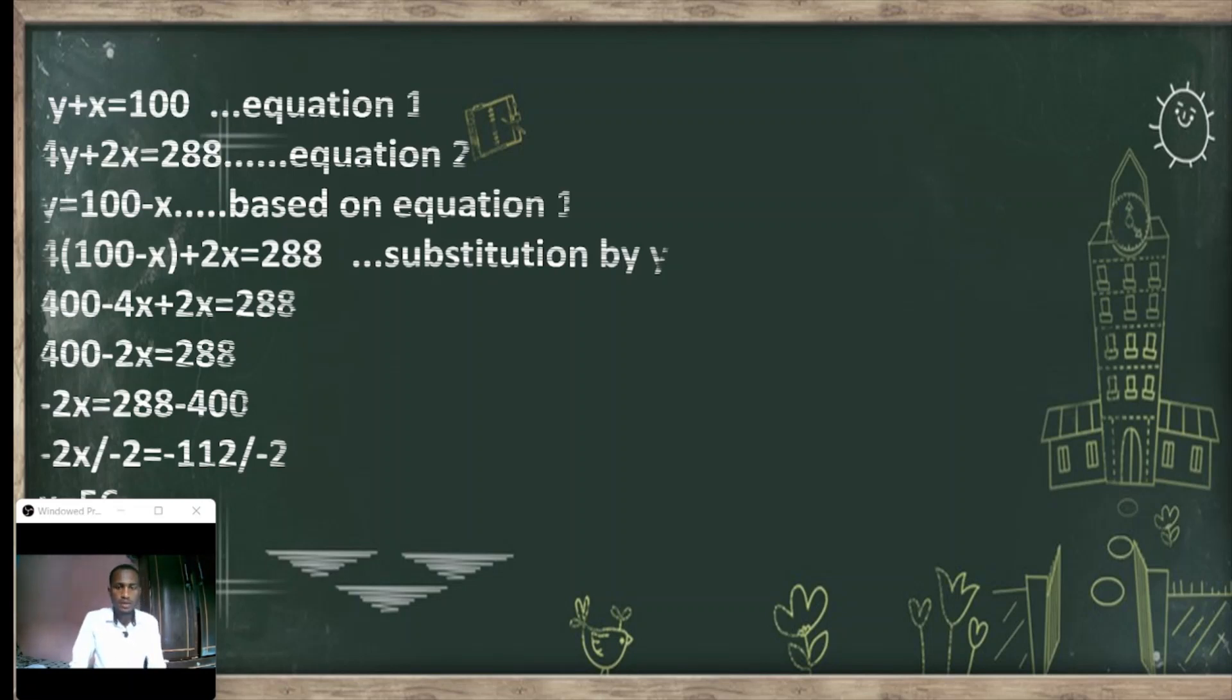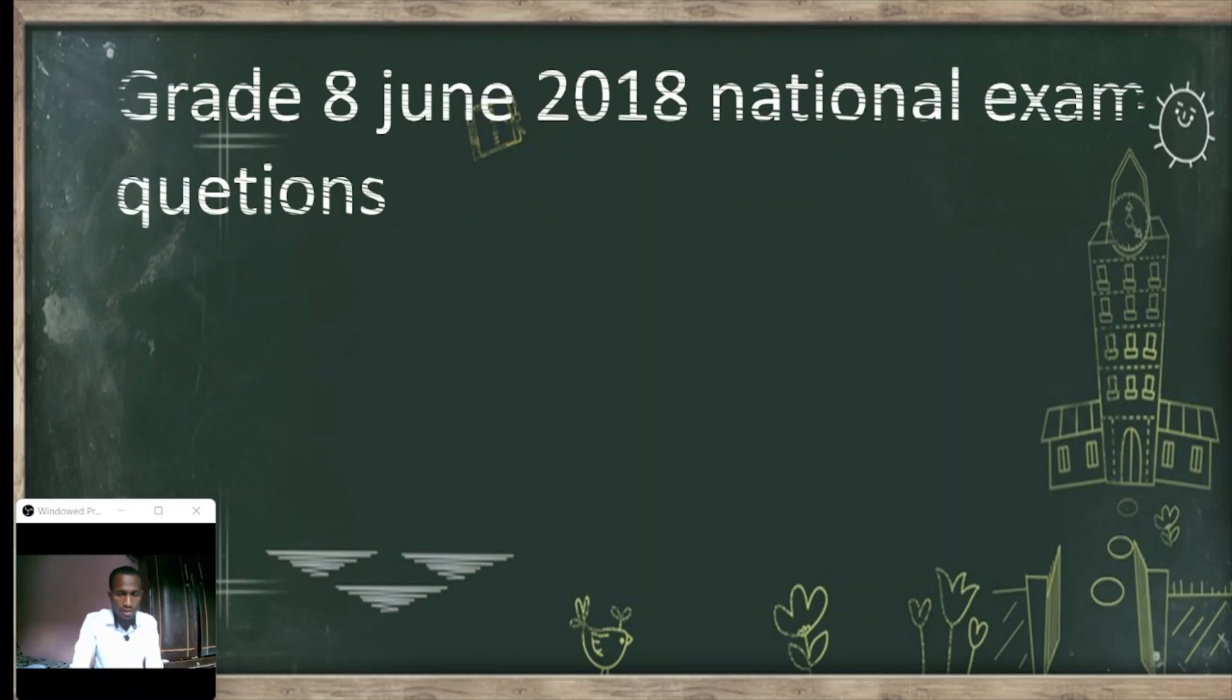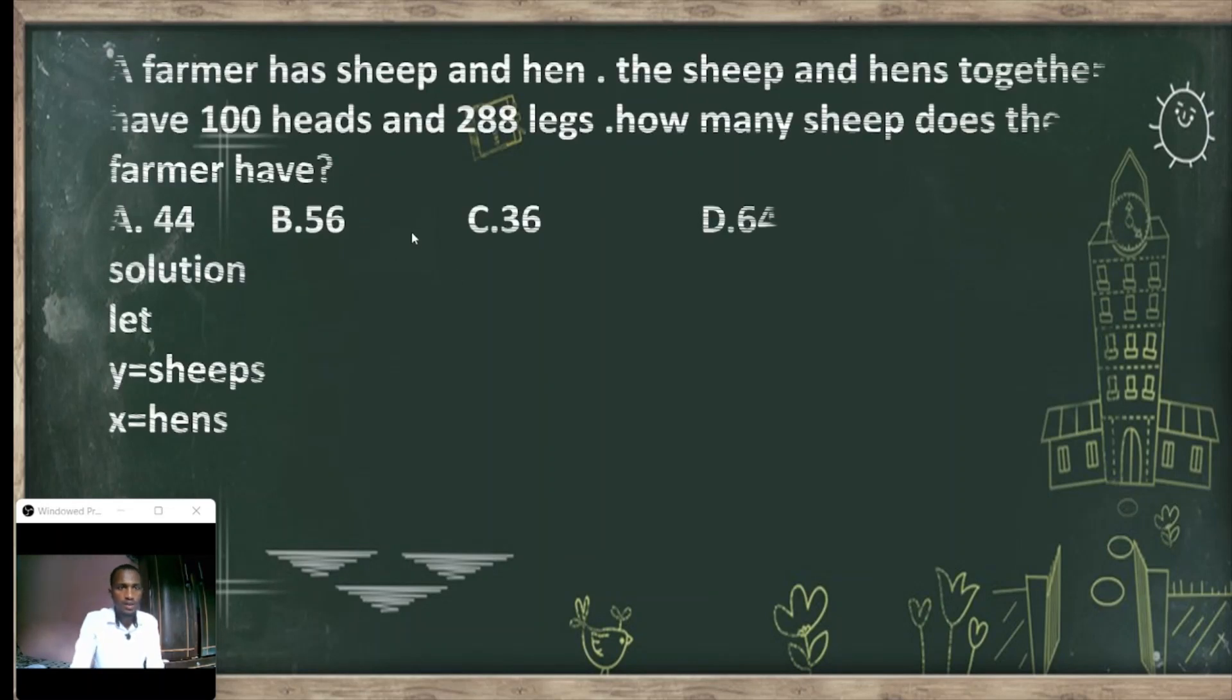Number of hens is 56. So for sheep, we said that x plus y equals 100. So 56 plus y equals 100. Y equals 100 minus 56. Y will be 44. So the answer is 44.